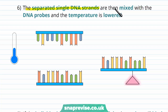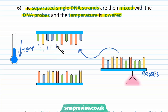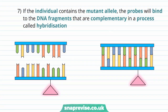The separated single DNA strands are then mixed with the DNA probes — both have been copied to make large numbers. The temperature is lowered so that if the probe comes into contact with the correct mutant allele it will bind, and the temperature is no longer high enough to pull them apart again. If the individual has the mutant allele, the complementary probe will bind to it in a process called hybridization.